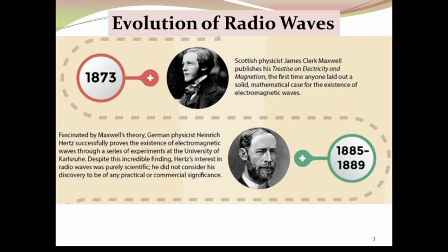Heinrich Rudolf Hertz is the German scientist. In 1885 to 1889, during this period, he proved all these equations experimentally. After the experimental proof, the unit of frequency was termed as Hertz, named after this German scientist Heinrich Rudolf Hertz. Heinrich Rudolf Hertz is the father of antenna systems. He is the first person who successfully proved all these electromagnetic equations with the help of antenna systems.